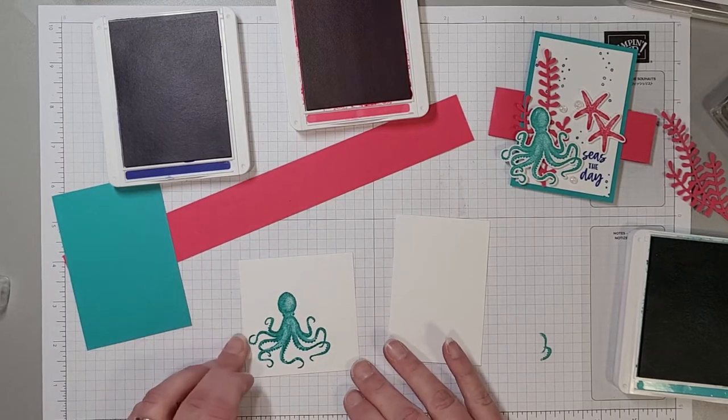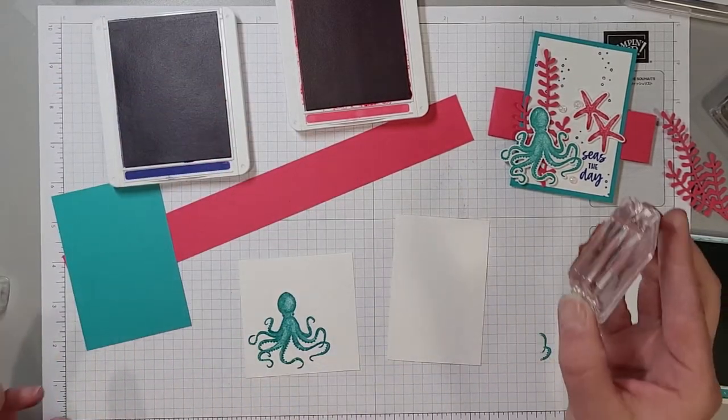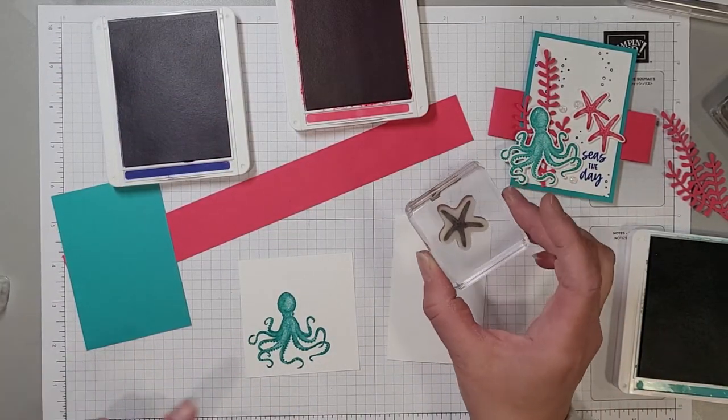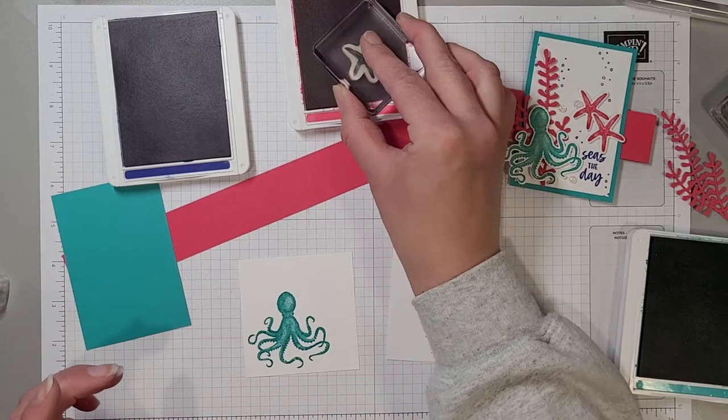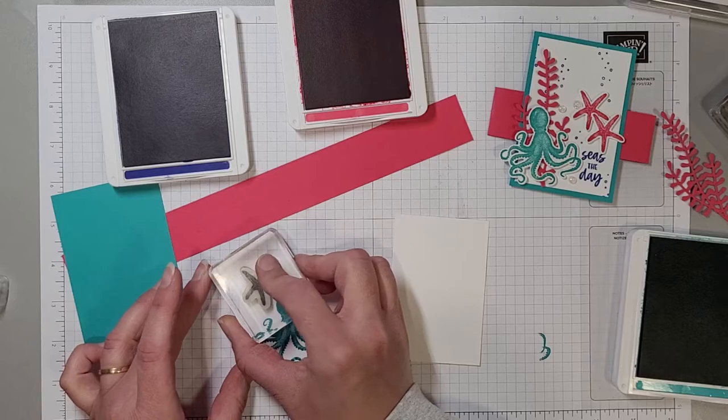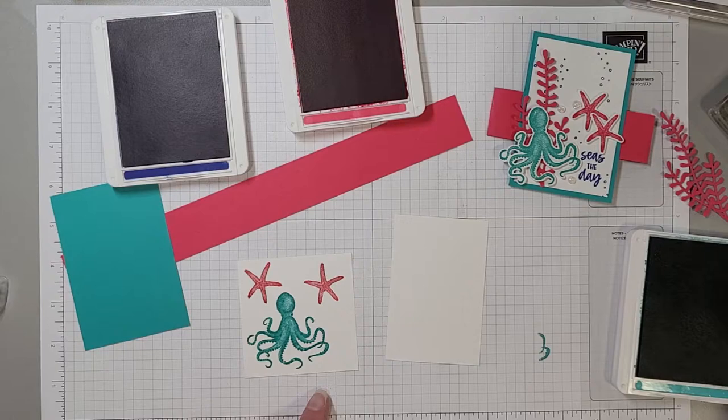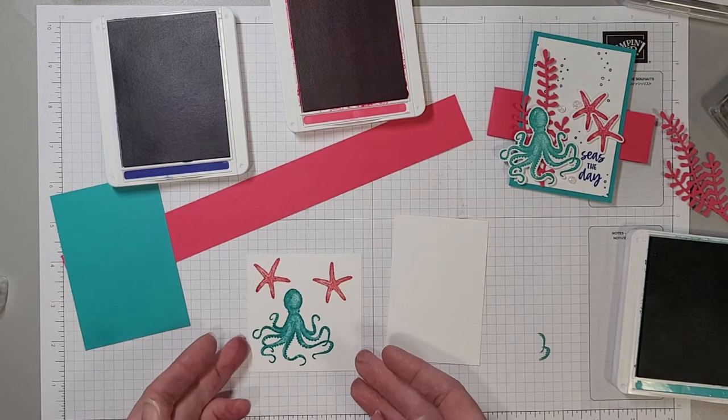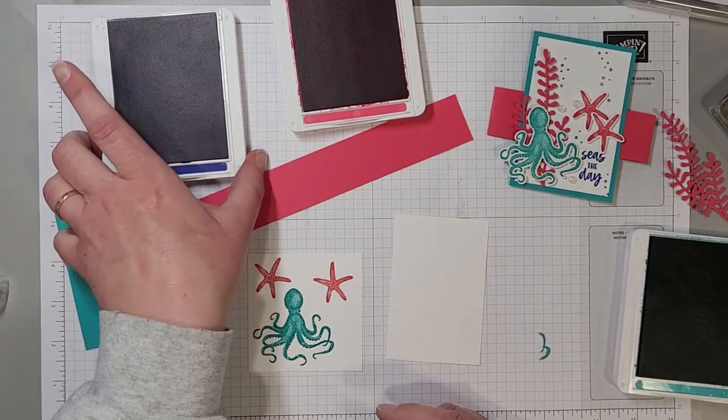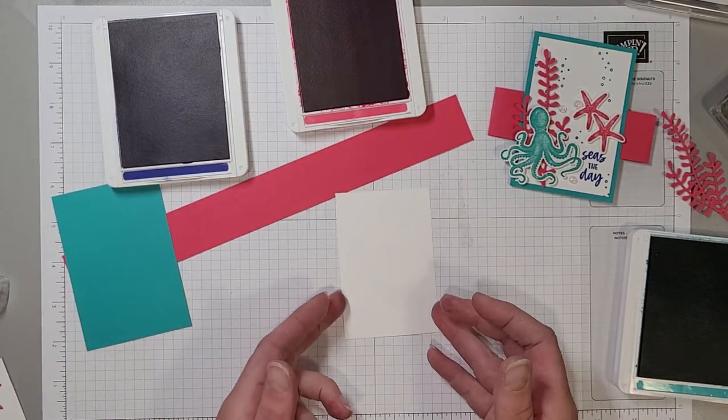Then we're going to stamp two of the starfish on here wherever they're going to fit. We are going to die cut these so it doesn't matter where they're getting stamped. That was in Melon Mambo and then that's all we need to stamp on that one so we'll set that aside.